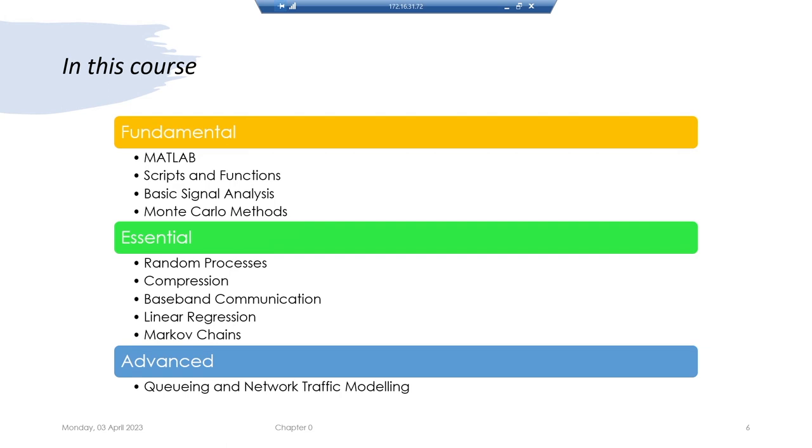That is where simulation helps. Simulation basically means that you are creating a model of a system — we will discuss what models are — and trying to mimic the practical system so that you can know the possible pitfalls and possible costs without actually making any losses. This course will be all about how we use programming to simulate our practical systems before we put our money into it.